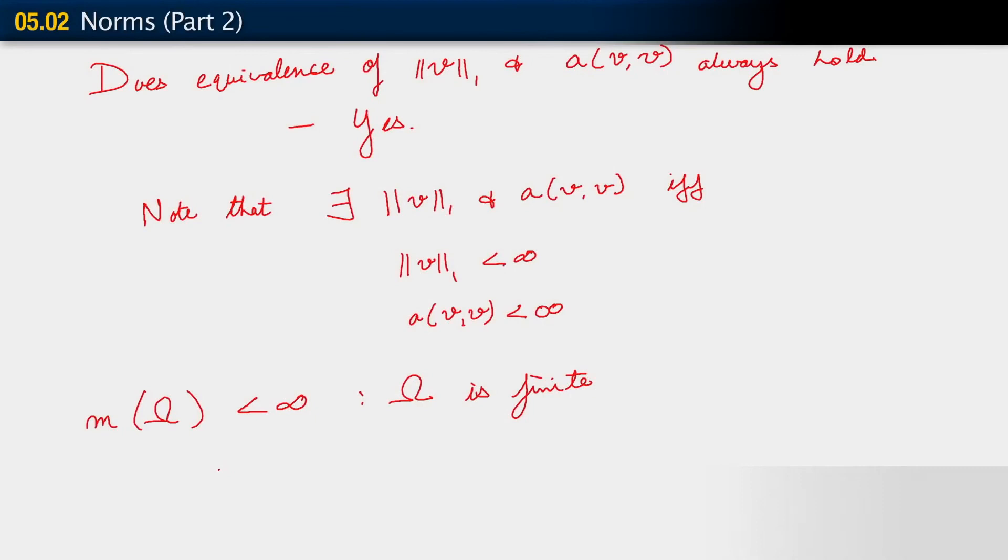So what this means is that if you now look at the H1 norm, and I'll write it just in this form. So if you look at it as V squared plus measure of omega to the power 2 over NSD, V comma x, the whole square, dx. And yes, of course, there is also the 1 over measure of omega, 1 over NSD here, and this whole thing raised to the half power. This is the H1 norm.